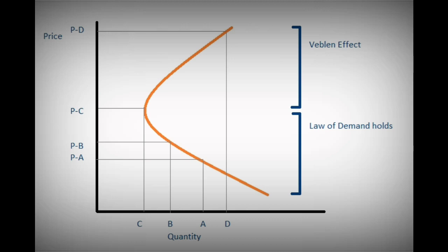Veblen goods are never necessary goods. Unlike most goods which have a downward sloping demand curve because demand goes down as prices go up, a Veblen good has an upward sloping demand curve. Veblen goods are high quality, coveted items — luxury items with a strong brand identity that are not sold in regular stores. Only very affluent and wealthy people can afford to buy them. The higher the price, the less likely other consumers can afford to buy. If a Veblen good's price decreases, demand will decrease because status-conscious consumers will view it as less exclusive.